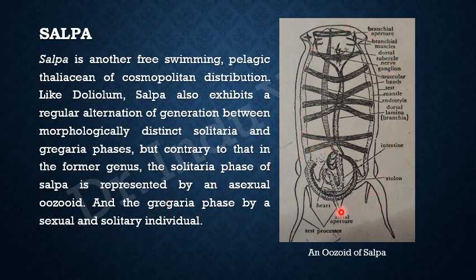Here you can see the entire animal. Unlike Pyrosoma, it is an individual free-swimming animal; it does not live in a colony. So it is a free-swimming pelagic thaliacean of cosmopolitan distribution. Like Doliolum, it also exhibits a regular alternation of generation between morphologically distinct solitaria and gregaria phases. However, contrary to Doliolum, the solitaria phase of Salpa is represented by an asexual zooid and the gregaria phase by a sexual and solitary individual.